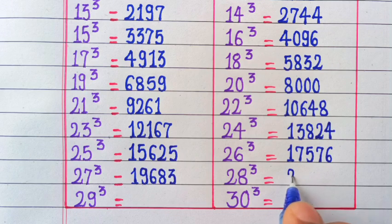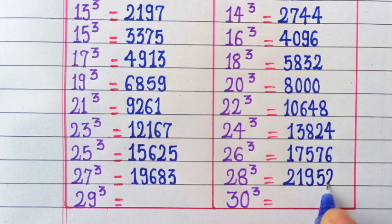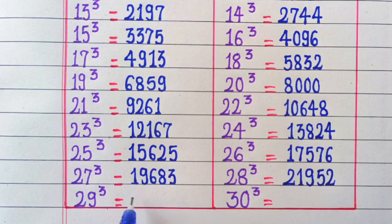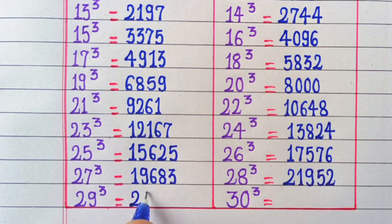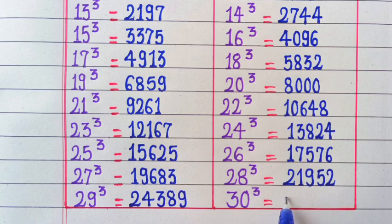28 cubed is 21952, 29 cubed is 24389, 30 cubed is 27000.